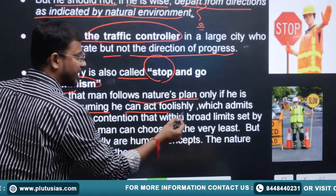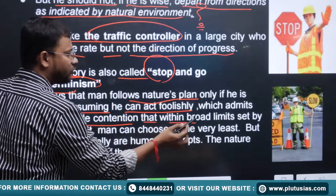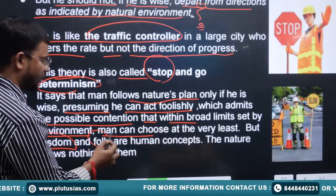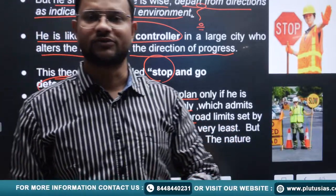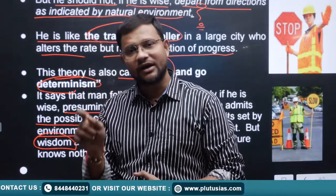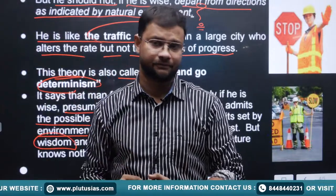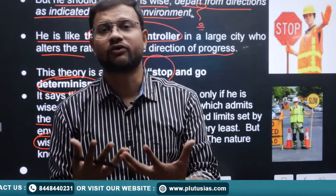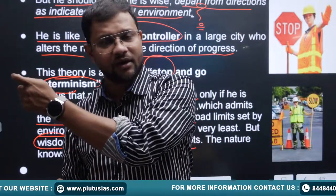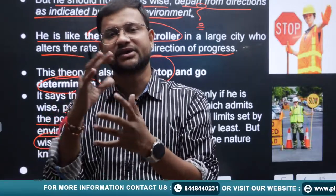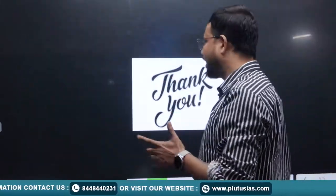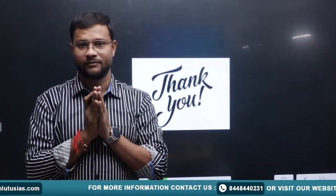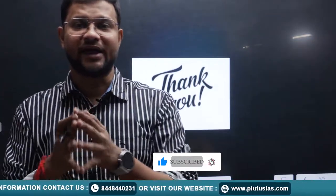Within broad limits set by the environment, man can choose, but wisdom and folly are human concepts — nature is not aware of either. Hence, nature will ultimately follow its own defined target. The man-environment relationship according to Griffith Taylor and neo-determinism lies on this kind of relationship: nature is the main driver and man is like a traffic controller. I hope you now have clarity on neo-determinism or stop-and-go determinism.